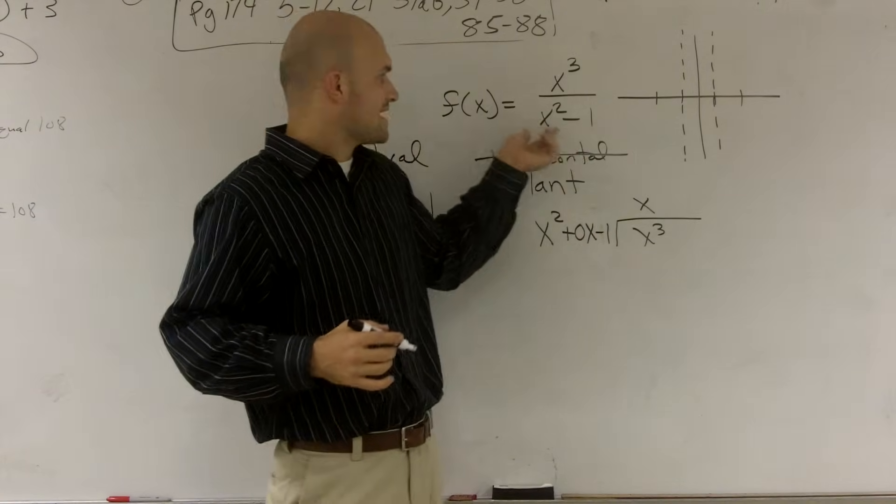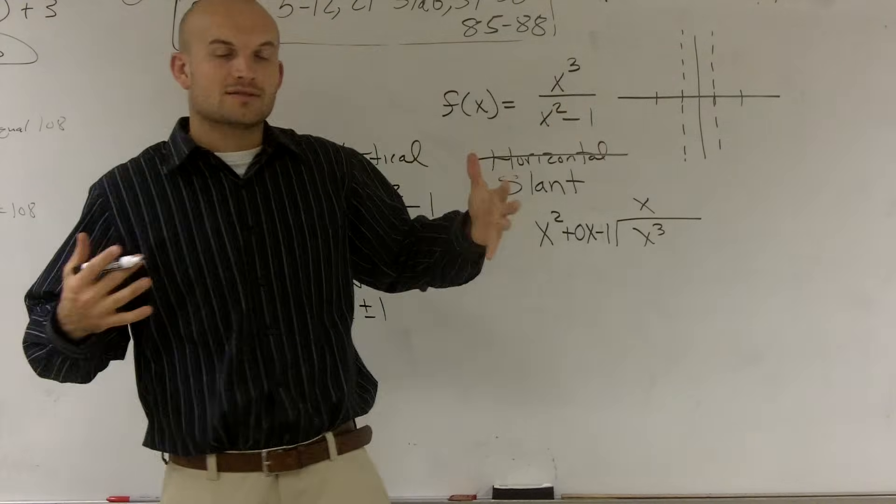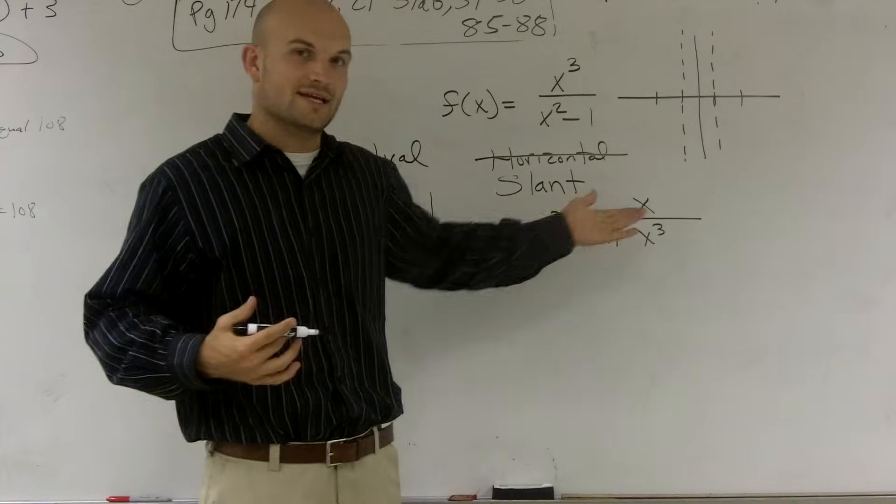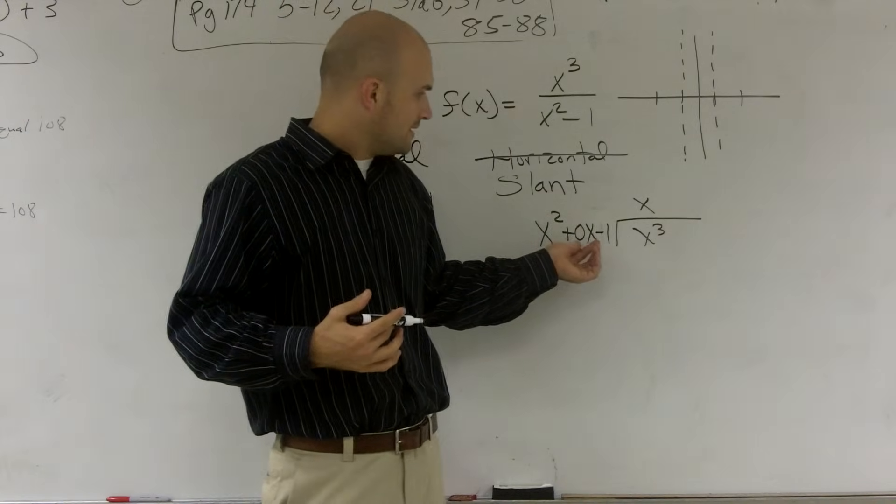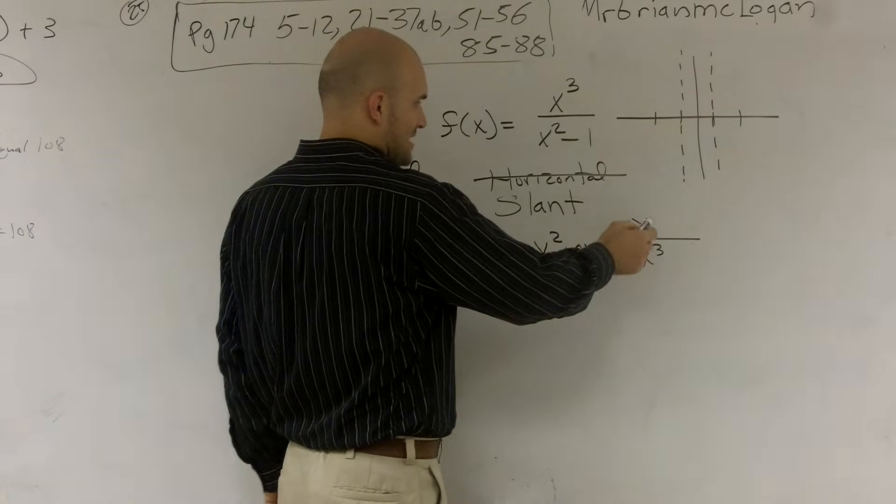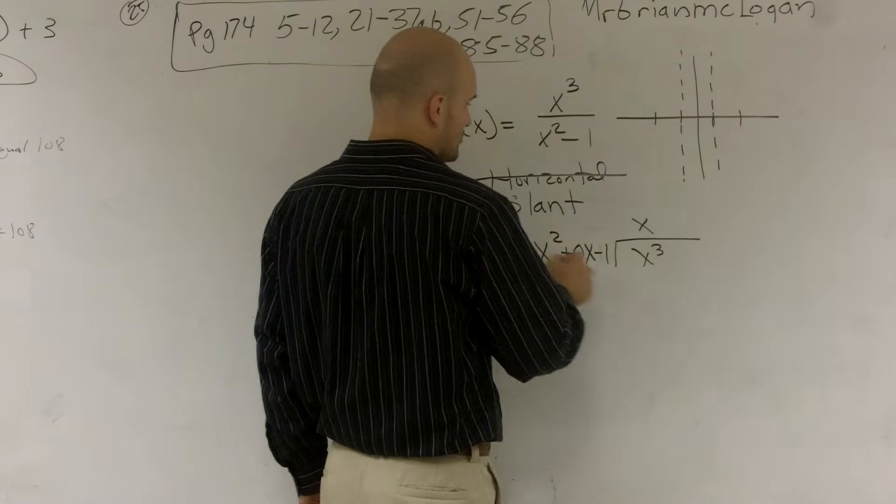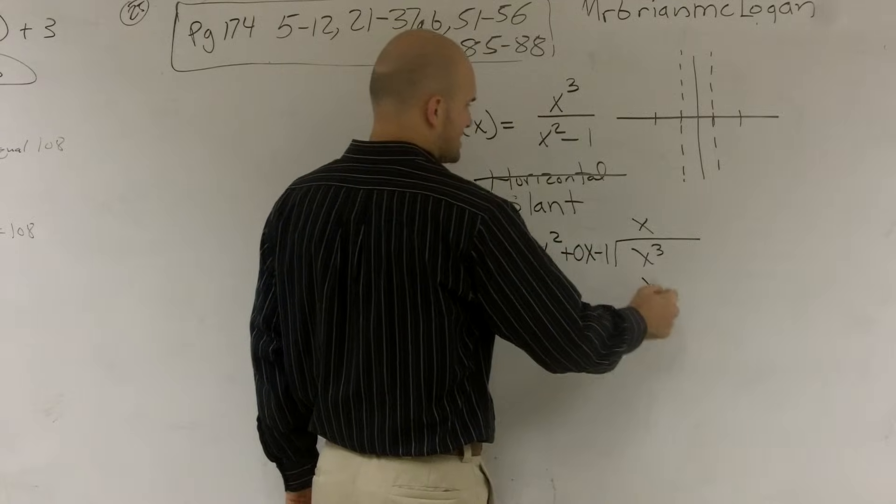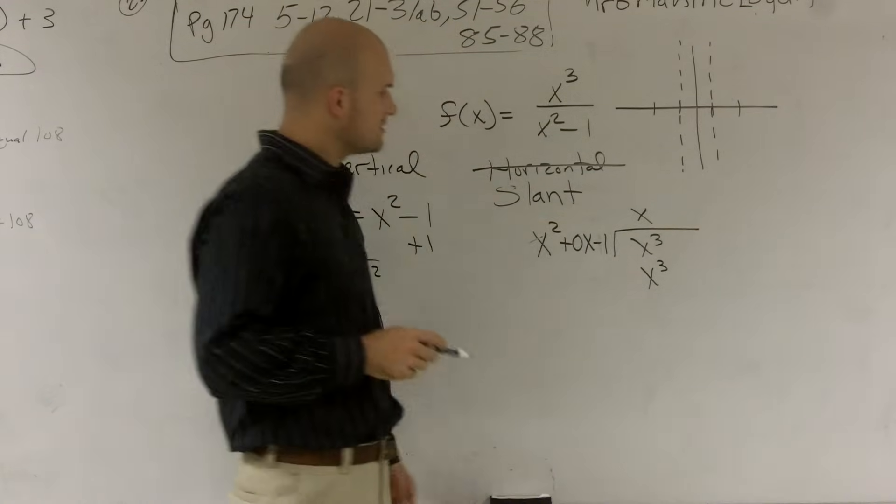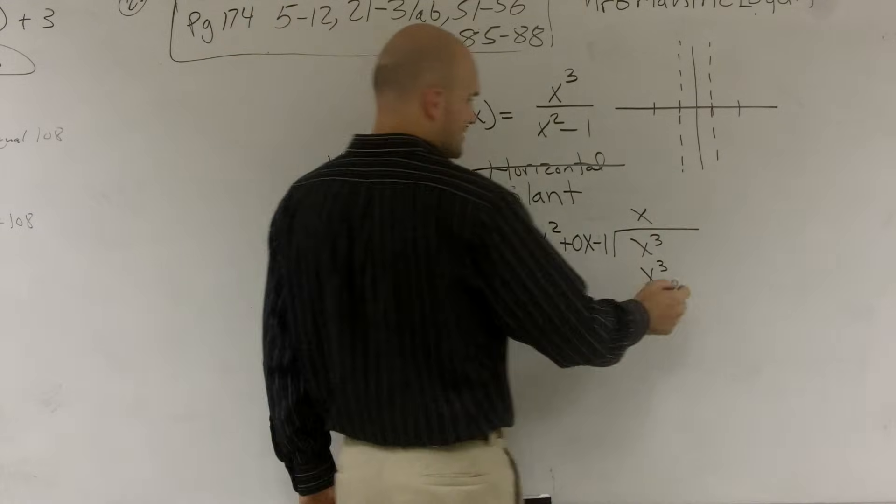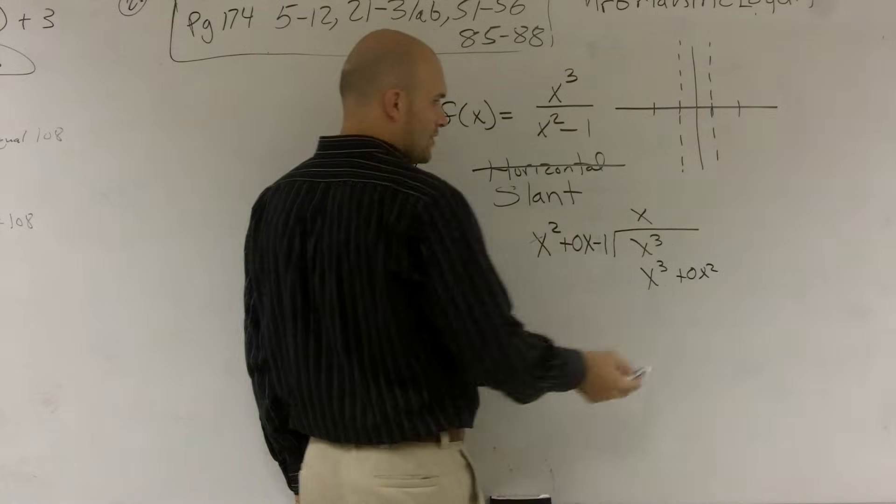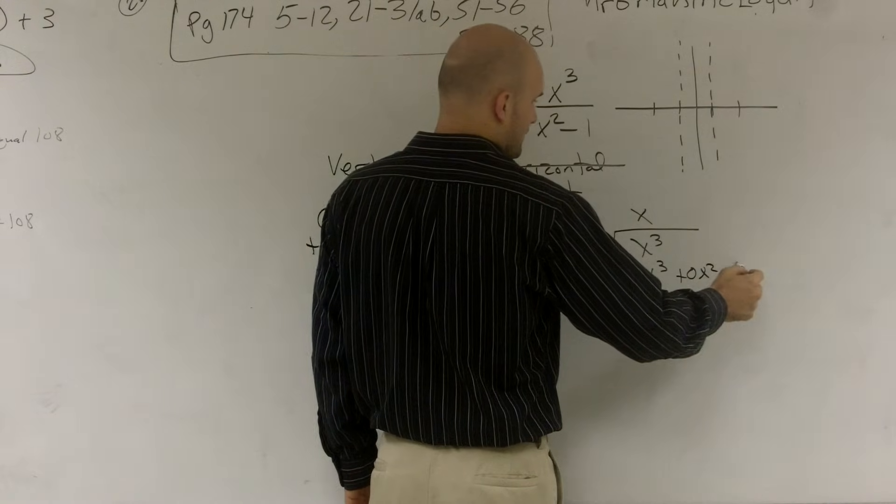Okay? Notice that my divisor is x squared minus 1. Well, to finish up this problem, I've got to make sure that every single x term is represented when divided. So x squared goes into x cubed x times. x squared times x is x cubed. Alright? x times 0x is still going to give me my 0x squared. And x times negative 1 is going to give me a negative 1x.